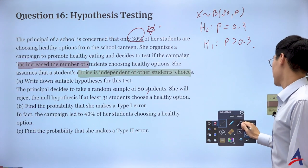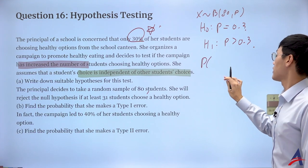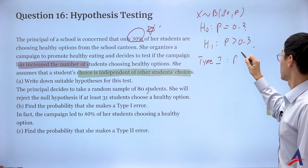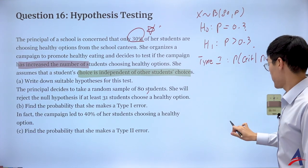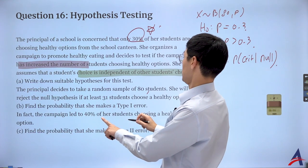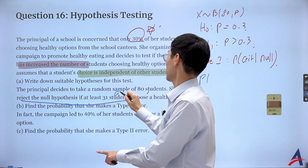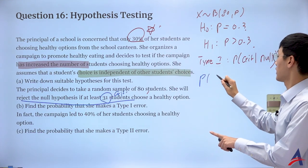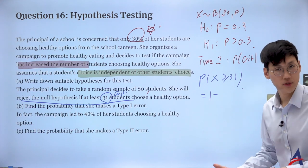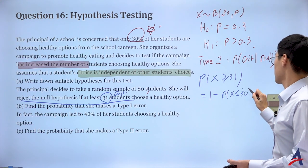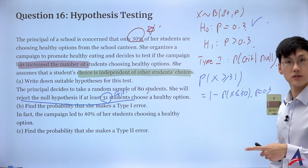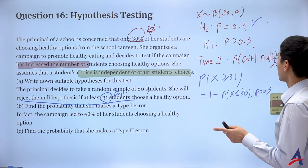The type 1 error is P(critical region | null hypothesis). The problem says reject the null if at least 31 students, so the critical region is X ≥ 31. For the calculator: P(X ≥ 31) = 1 - P(X ≤ 30). I use the null distribution with proportion 0.3, so X ~ B(80, 0.3). That gives the type 1 error.